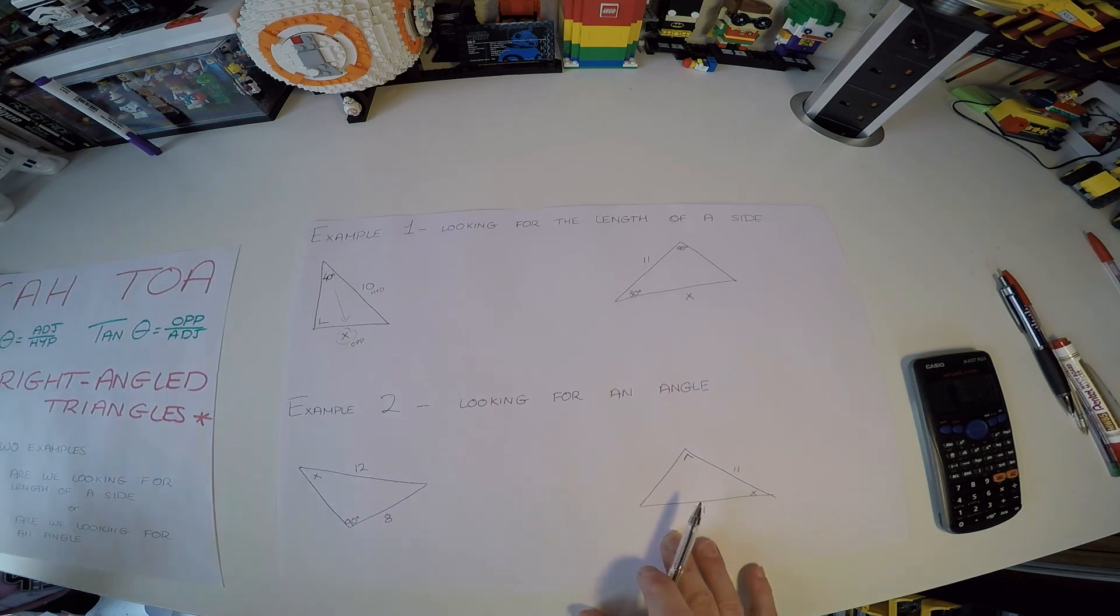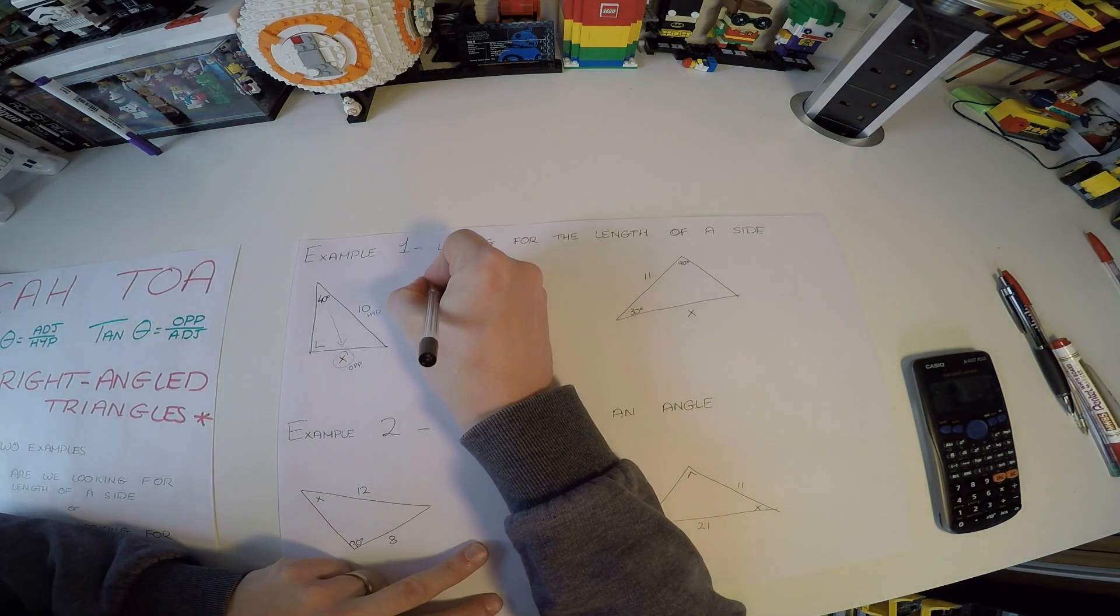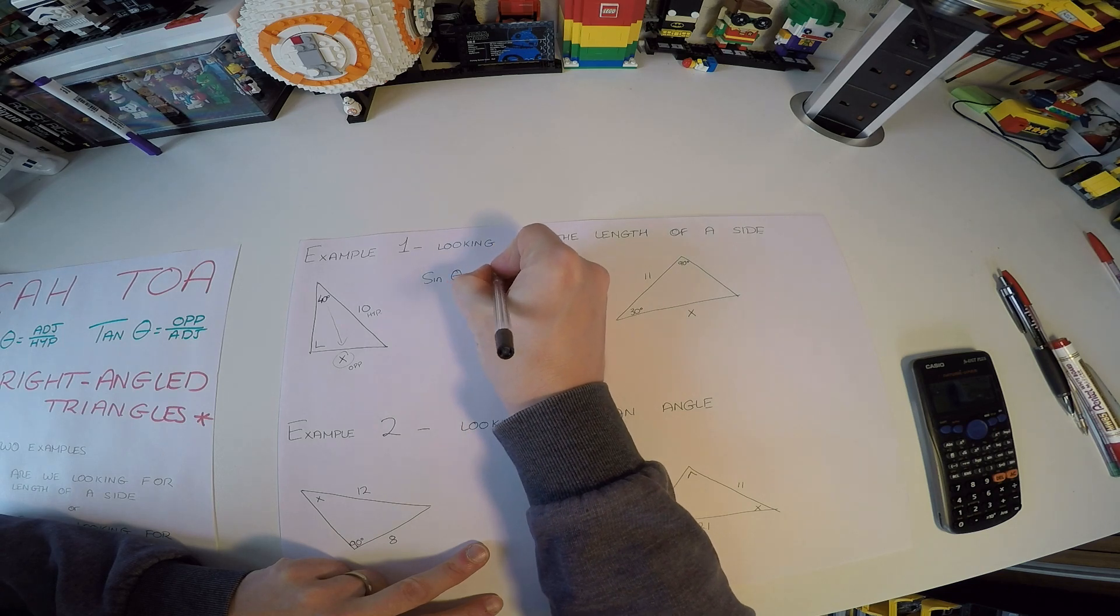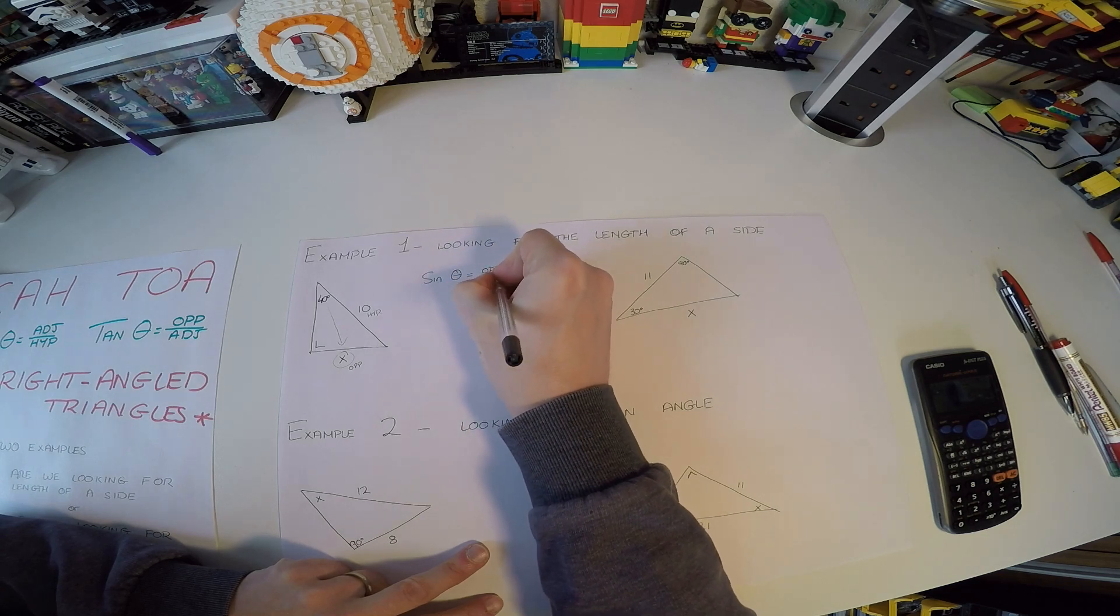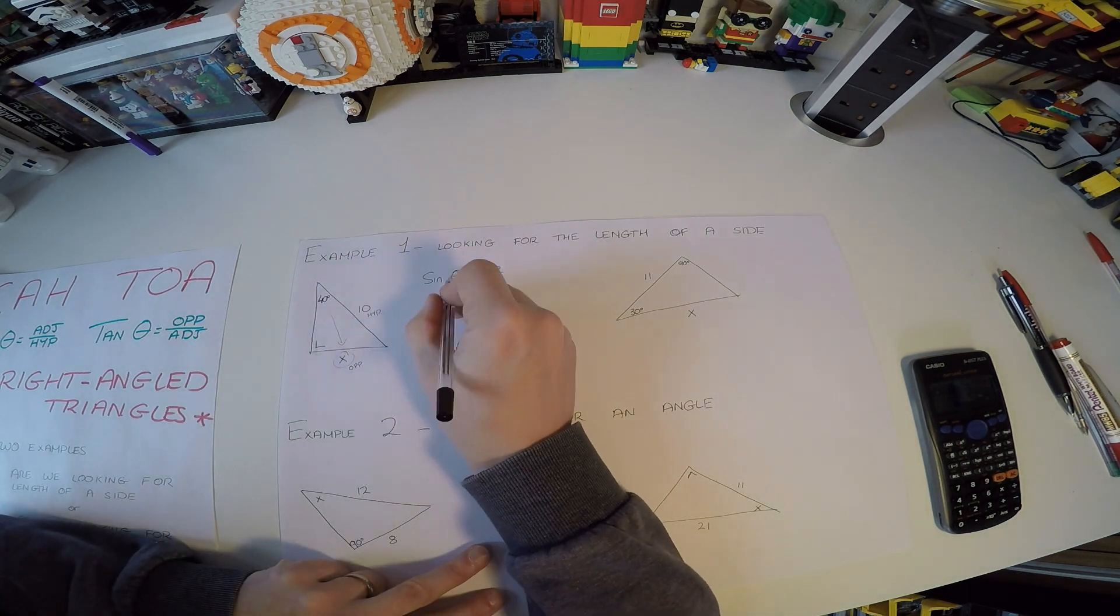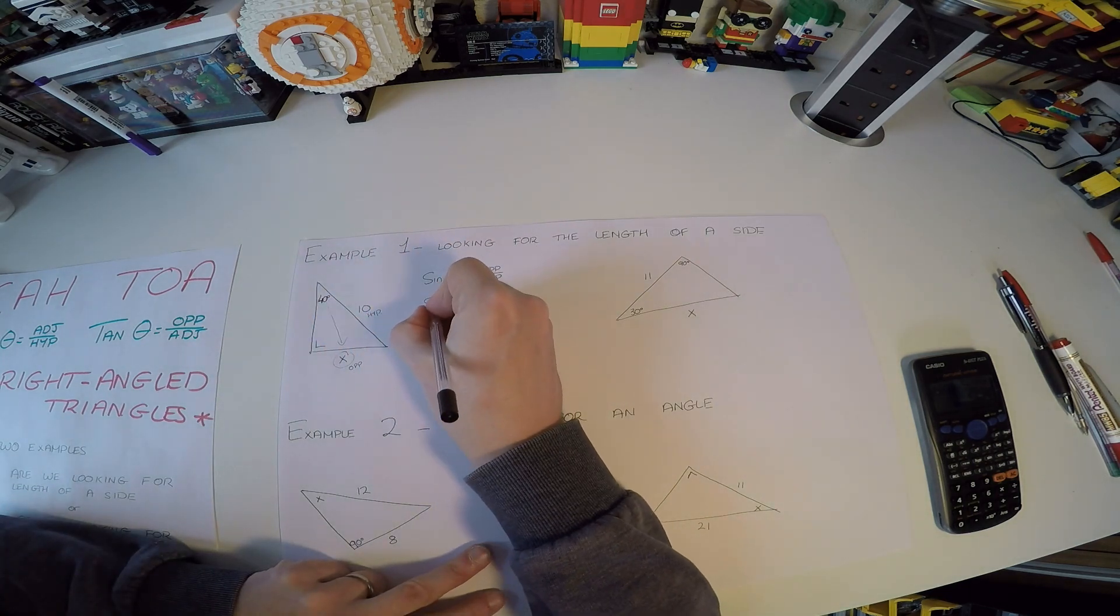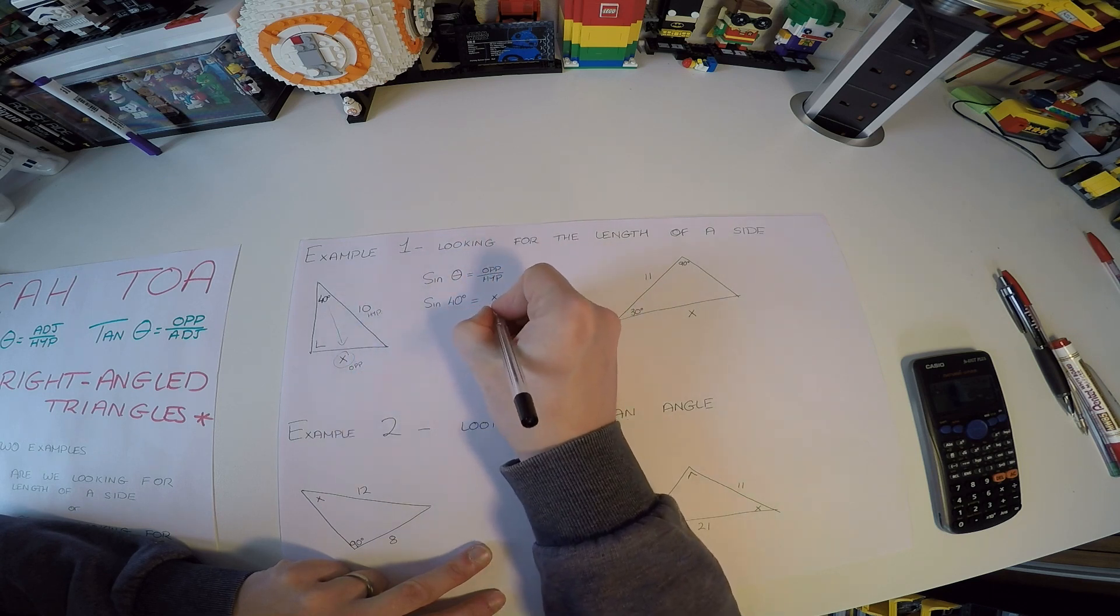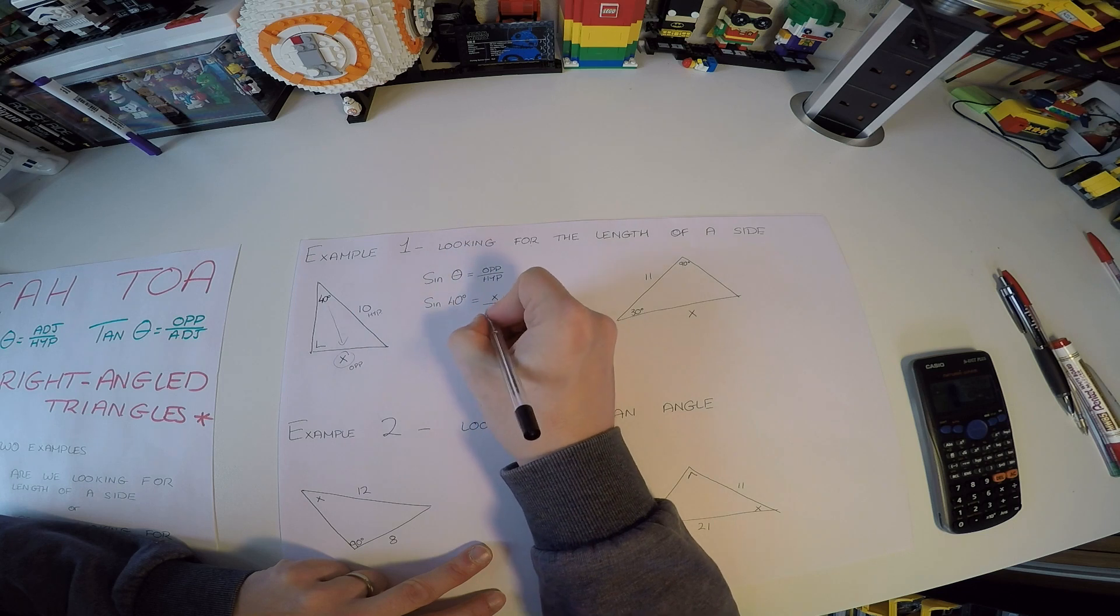So we know we have to use the sine formula. So that's where it says that the sine of theta is equal to opposite over hypotenuse. So let's put in what we have. Our angle is 40 degrees. So that's the sine of 40 degrees. And our opposite side is X, and our hypotenuse is 10.